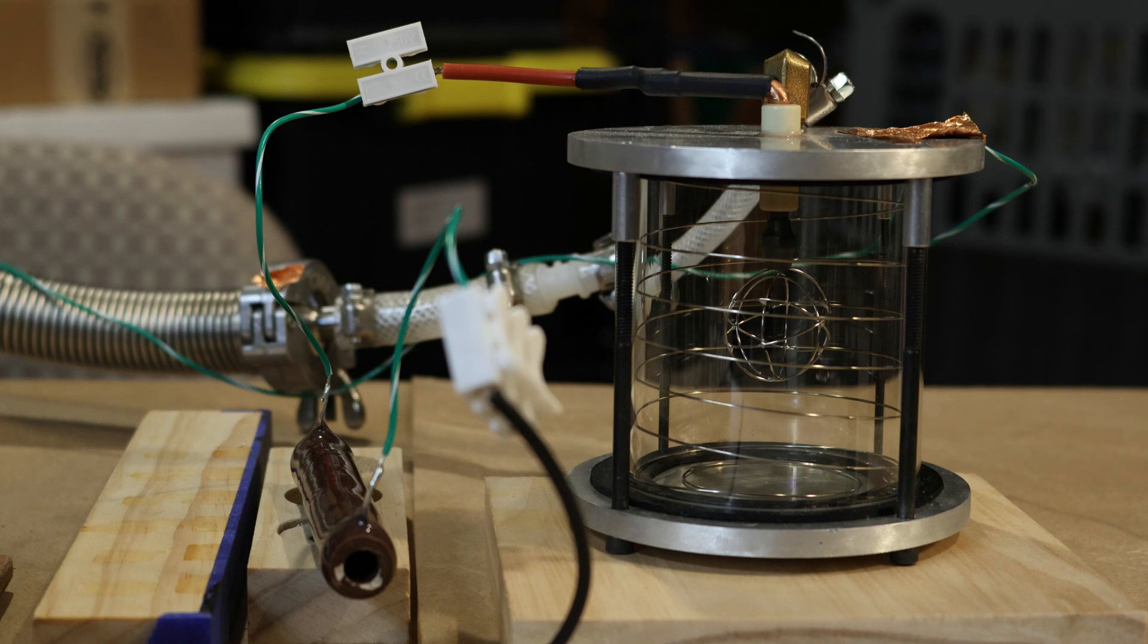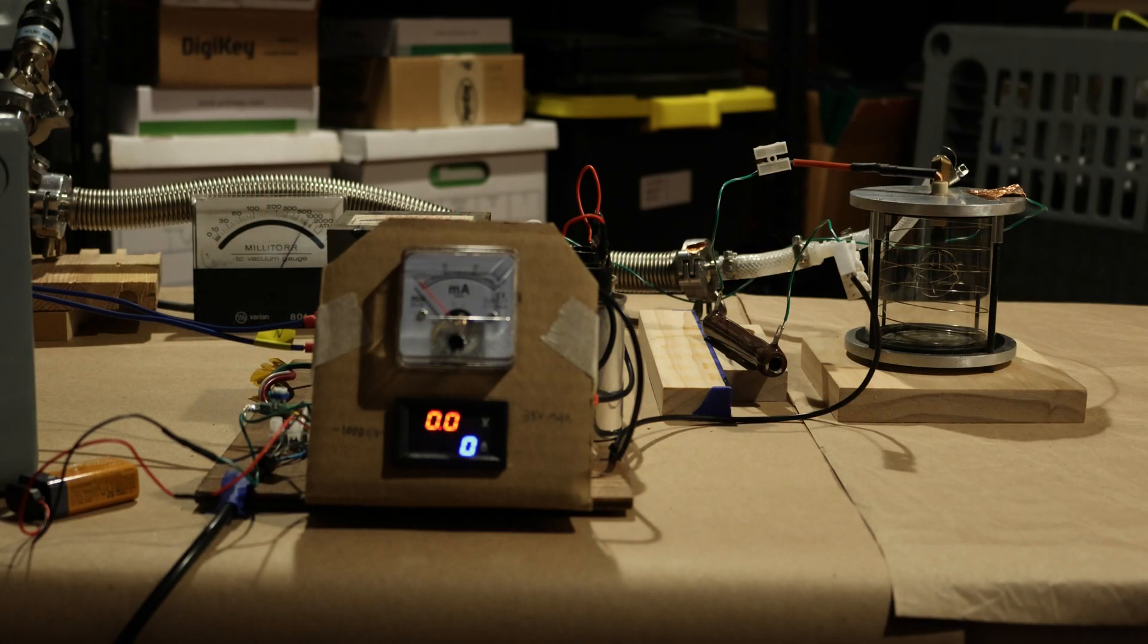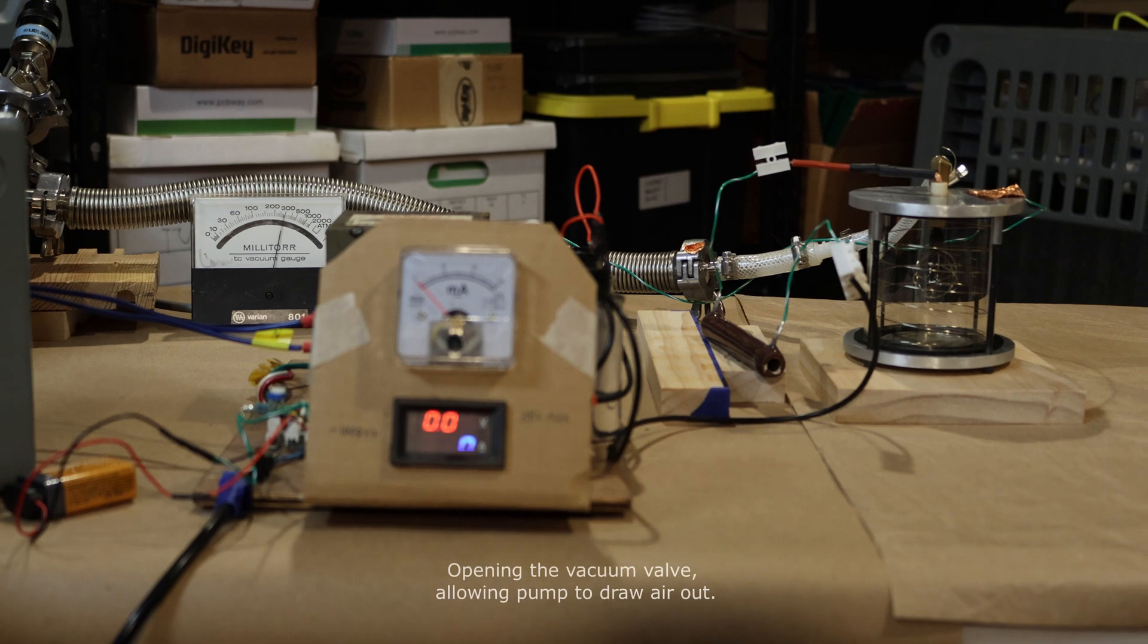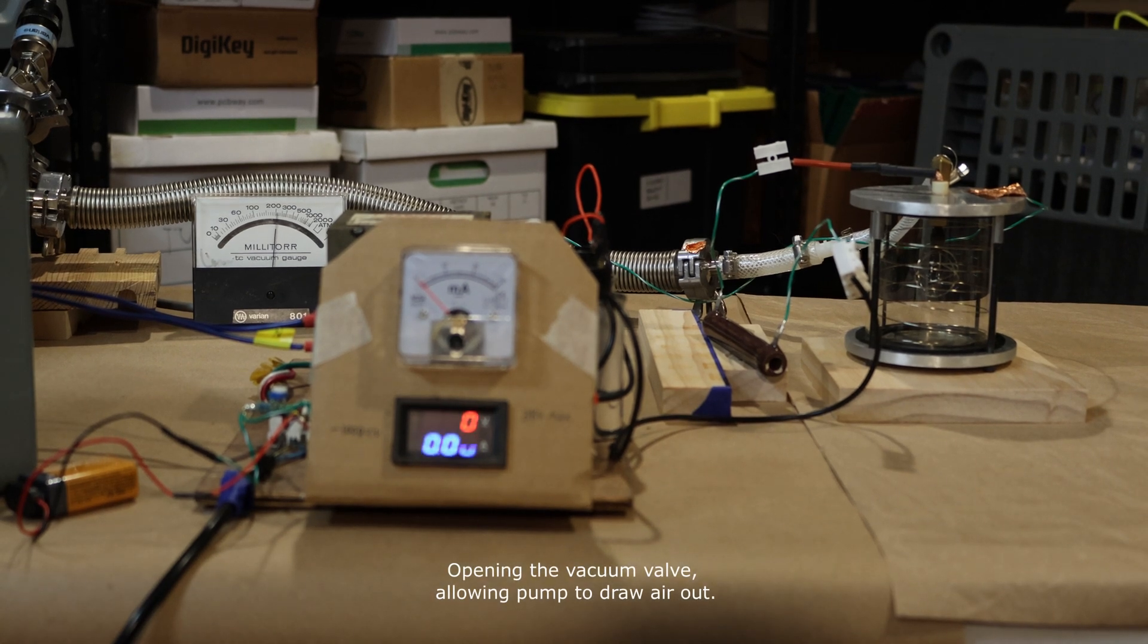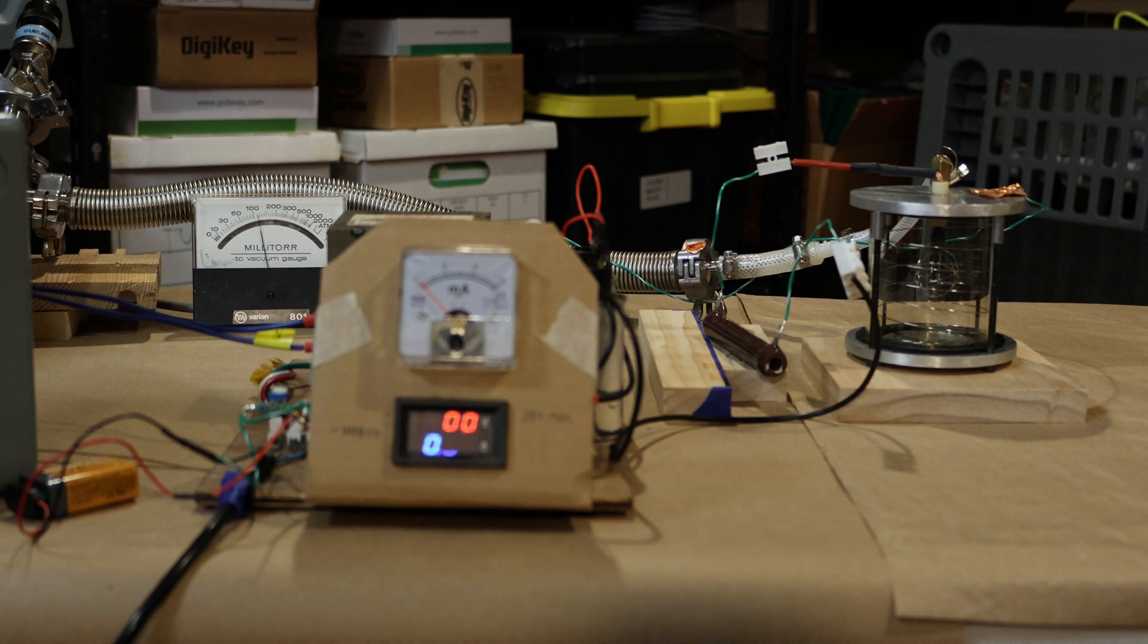All right guys, you can probably hear the vacuum pump running in the background now. I'm going to open the vacuum gauge and we're actually going to see how quickly this pulls that vacuum meter down. Let's turn the lights on for a sec. This is how impressive this vacuum pump actually is. As soon as we're below about a hundred millitorr, we can start to get some pretty good plasma.